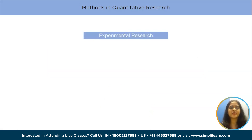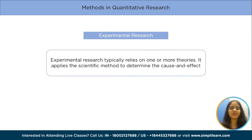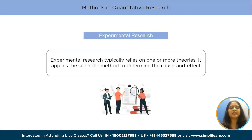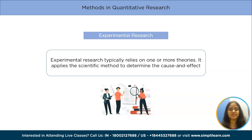The last type is experimental research. As its name implies, experimental research typically relies on one or more theories. It is predicated on theories known as real experimentation and applies scientific methods to determine the cause and effect link between a number of study-related variables.